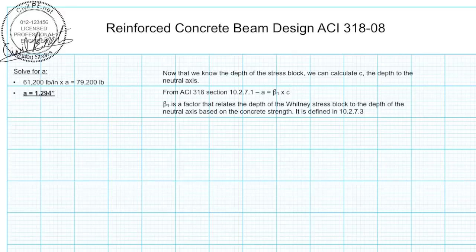For f'c above 4000 PSI, beta1 shall be reduced linearly at a rate of 0.05 for each 1000 PSI of strength in excess of 4000 PSI, but beta1 shall not be taken less than 0.65. Basically that comes down to this equation: 0.65 is less than or equal to 0.85 minus (f'c minus 4000 PSI) over 1000 times 0.05, less than or equal to 0.85.